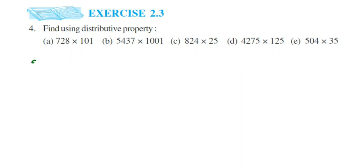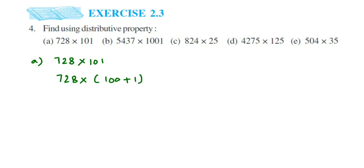We don't have to directly multiply — we have to split the number. Let us take the first question which is 728 multiplied by 101. Now, you can split the number in your own way but the final answer will be the same. Choose a number such that when you split it like some number plus some number, you should try to make zeros in the number so that multiplication becomes easy. For example, 101 — I am going to split 101 as 100 plus 1. Now you can see that it's distributive property we have to use — we have to open the brackets.